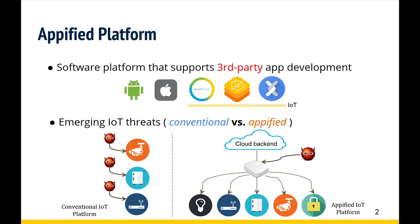We have seen many attacks targeting conventional Internet of Things — for example, garage monitors being turned into surveillance cameras and smart refrigerators connected to botnets. But since these devices are usually made by different vendors and are not interconnected, these attacks tend to be device-specific. However, on an appified IoT platform, because an app can potentially get access to all devices, a malware, if installed, can control all devices, which may cause more severe security impact.